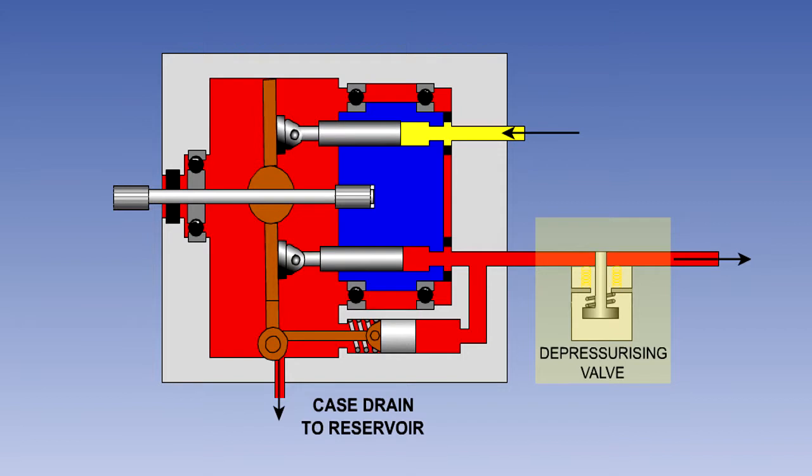This valve is useful in the event of a leak in that part of the system supplied solely by its pump. The solenoid is energized to offload the pump, so in the event of solenoid failure, the pump will continue to operate.